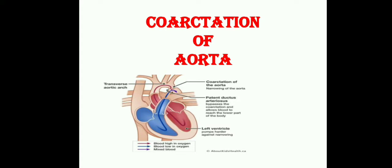Happy morning dear students. Today's topic is coarctation of aorta. This condition comes under obstruction to blood flow. These are acyanotic heart disease conditions, that means left to right shunt conditions. Under that we discussed previously aortic stenosis, pulmonary stenosis, and now we discuss coarctation of aorta.